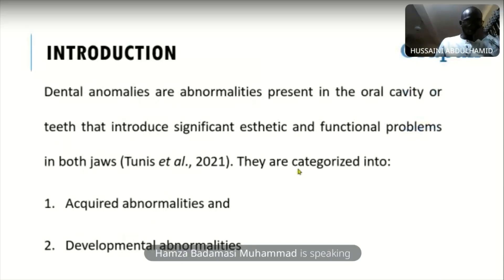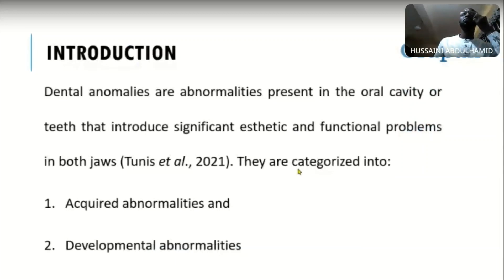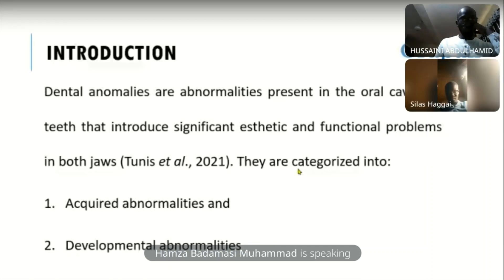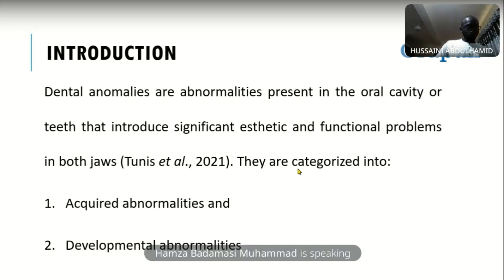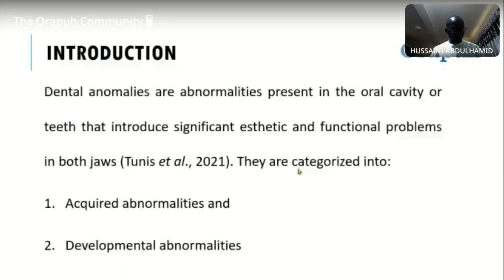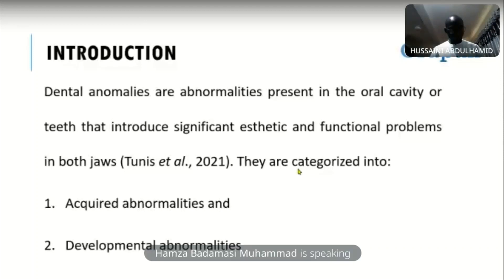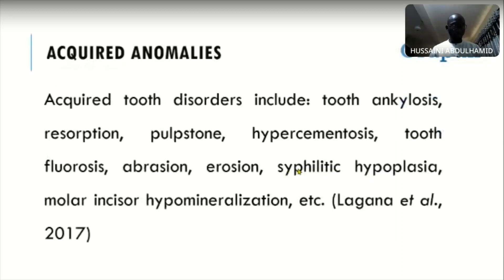Starting with introduction: dental anomalies are abnormalities that are present in the oral cavity or the teeth, which introduce significant aesthetic and functional problems in both the lower and the upper jaws. They are categorized into two broad classes: acquired abnormalities, and developmental anomalies which happen during the developmental process of the tooth or teeth.